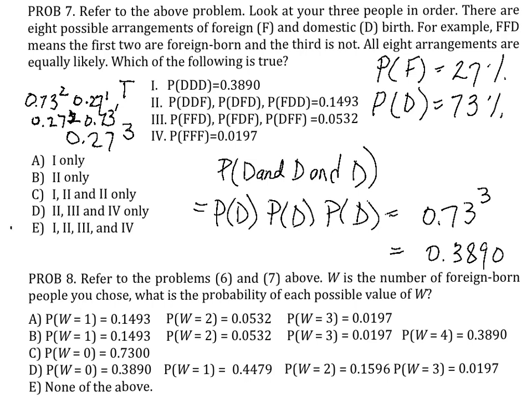For question 8, using the above information about the variable W, we're going to define now a new W as the number of foreign-born people you choose. Actually, this is the original W that we defined in number 6, but then in number 7 we went to look at the arrangements.